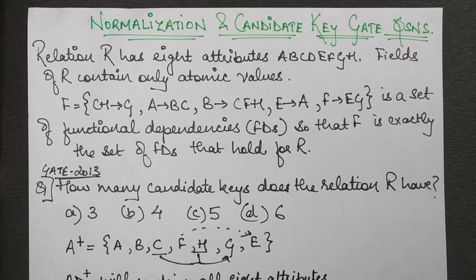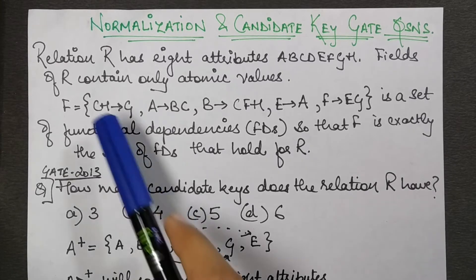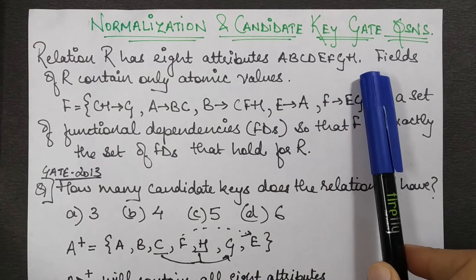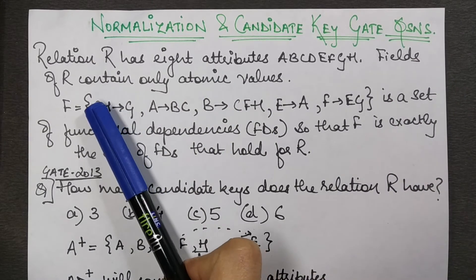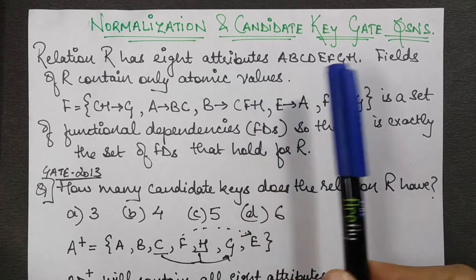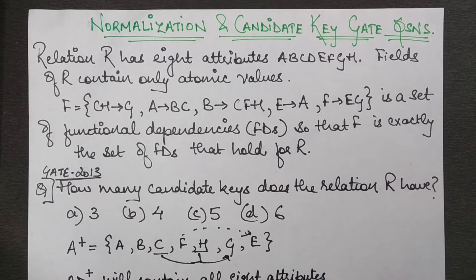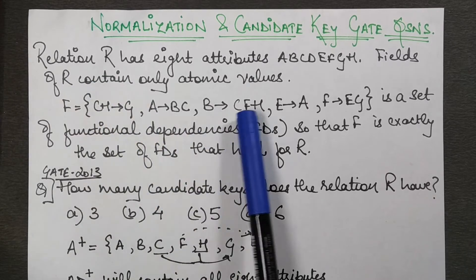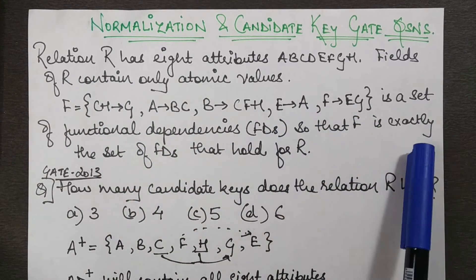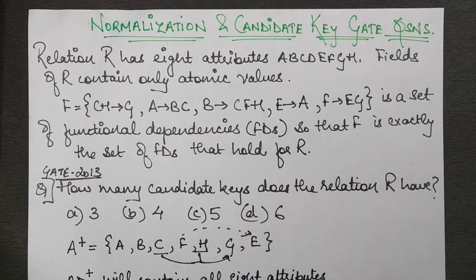The question says: relation R has eight attributes A, B, C, D, E, F, G, H. Fields of R contain only atomic values. This means that the relational schema is in 1NF, because in 1NF the only requirement is that values should be atomic — there should be no multi-valued attributes. So we also have the functional dependency set given to us.